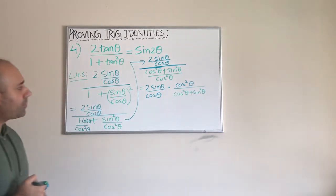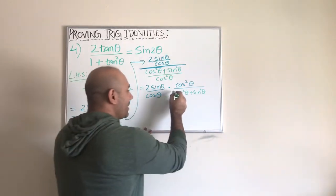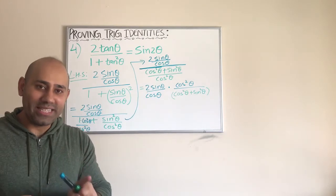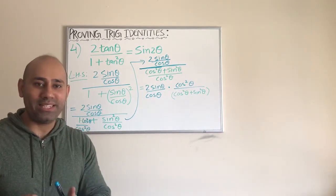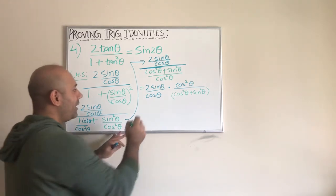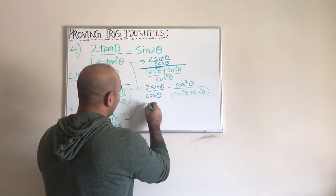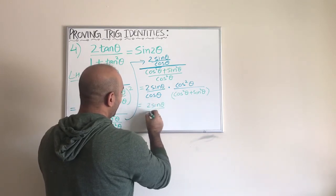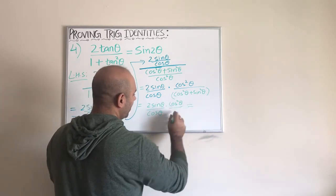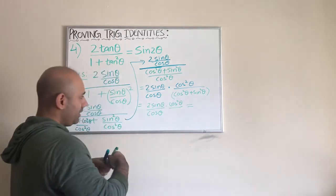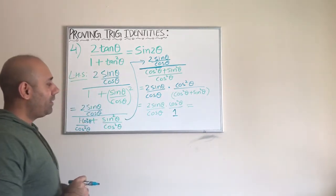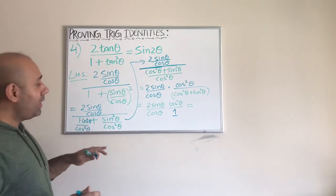Wait — cosine squared theta plus sine squared theta is the very first Pythagorean identity, the most fundamental of these identities, and we know that equals simply one. So we rewrite this as two sine theta over cosine theta, times cosine squared theta over one — we replace cosine squared theta plus sine squared theta with one using the Pythagorean identity.